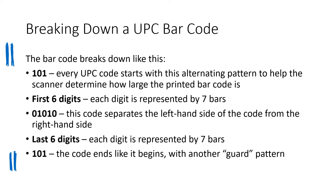In the middle of the code is a 01010 — a light bar, a dark bar, a light bar, a dark bar, and then a light bar. That's always going to be in the middle of every UPC code, and it separates the left-hand side from the right-hand side. Then we have the last six digits of the code. Remember, a UPC code is 12 total digits, including a check digit. And finally, at the end of the code, it ends in a 101.